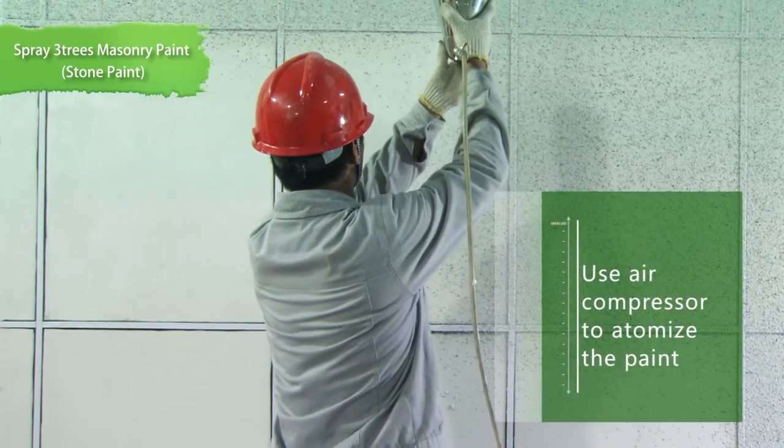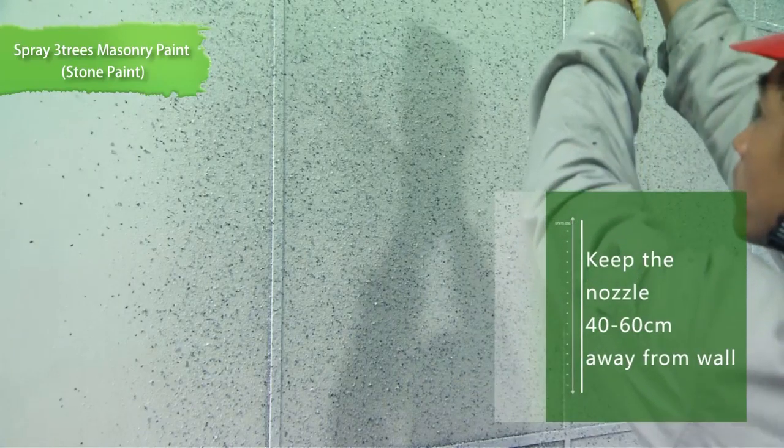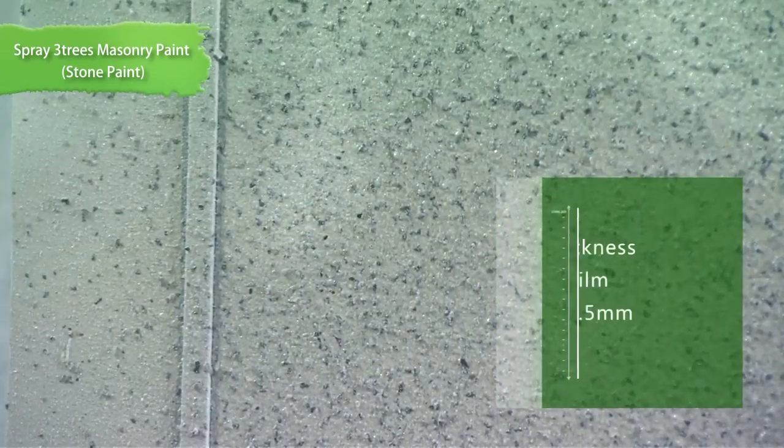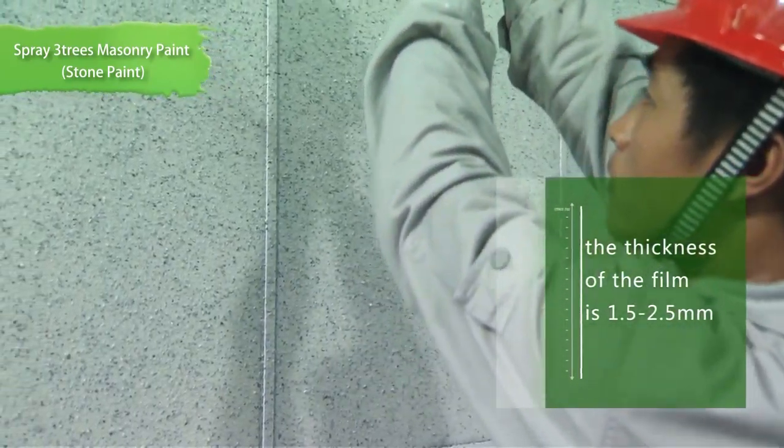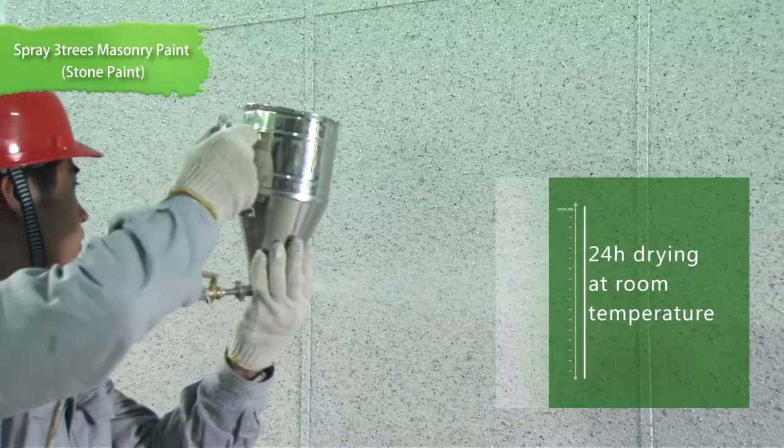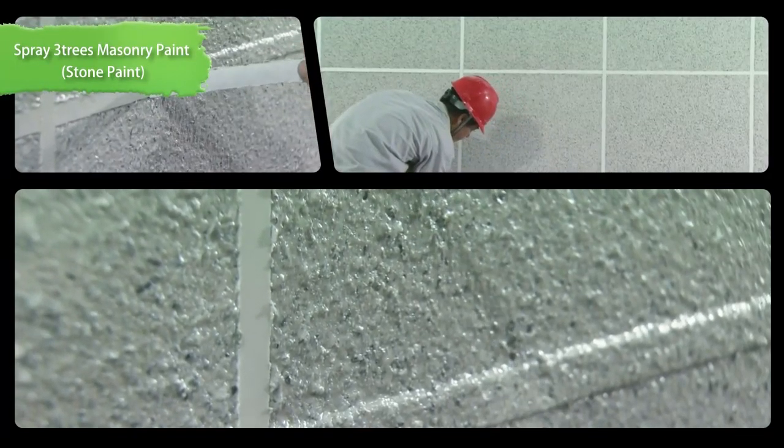The spray gun has to be perpendicular to the wall. The distance between the nozzle and the wall has to be 40 to 60 centimeters. Spray the wall evenly. The thickness of the film needs to be 1.5 to 2.5 millimeters. If using two guns or more guns, you should be spraying it again before the touch dry of the previous application. After spraying, remove the masking tape immediately.